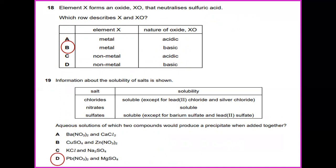Information about the solubility of salts is shown. Chlorides are soluble except for lead chloride and silver chloride. Nitrates are soluble. Sulfates are soluble except for barium sulfate and lead sulfate. A solution of which two compounds would produce a precipitate when added together? The answer for question 19 would be D.